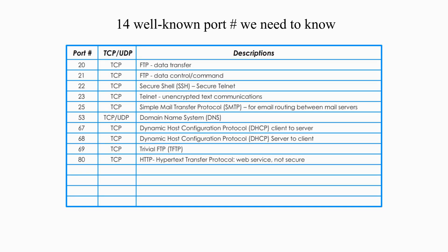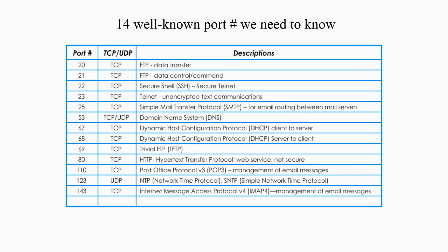Port 80 is for HTTP, or Hypertext Transfer Protocol, a non-secure web service. Port 110 is for Post Office Protocol version 3, POP3, used to retrieve email from the server. Port 123 is for NTP or SNTP — NTP is Network Time Protocol, and SNTP is Simple Network Time Protocol. Port 143 is for Internet Message Access Protocol version 4, IMAP4, also used to retrieve email from email servers, just like POP.